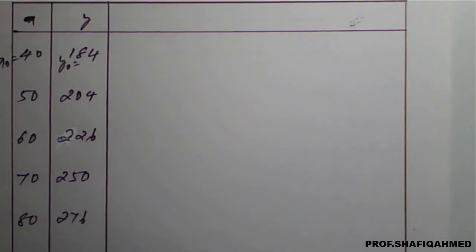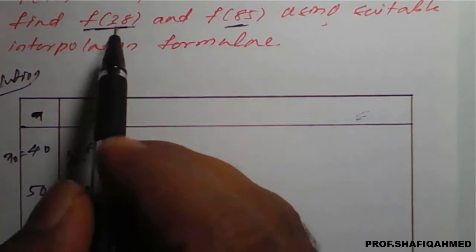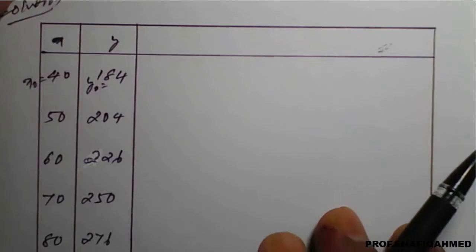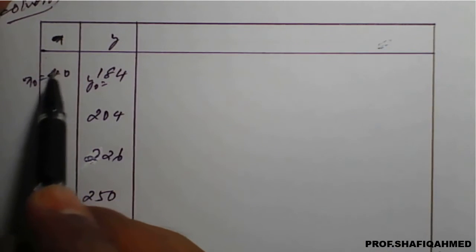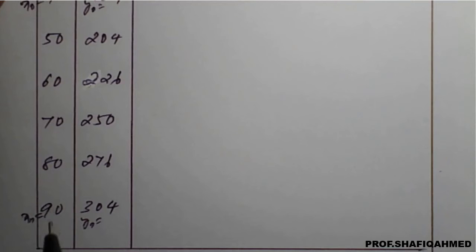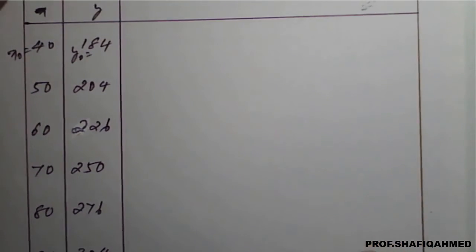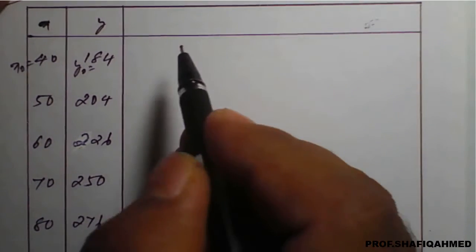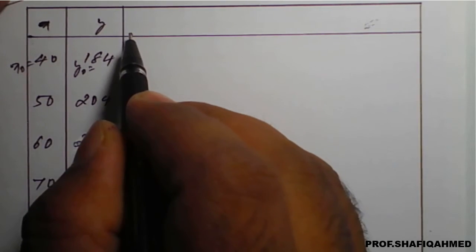This question includes both forward and backward interpolation because x value is 38 as well as x value is 85. x value 38 is before this, so therefore forward interpolation is needed. x value 85 is in between 80 and 90, so we need to go backward. From the same table we need to collect both forward and backward values.